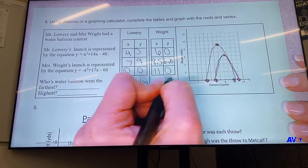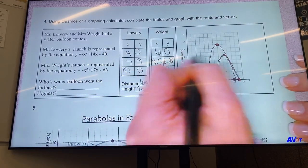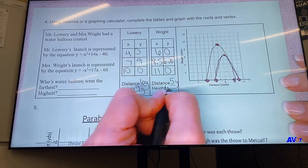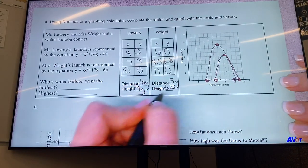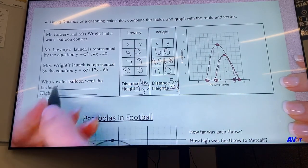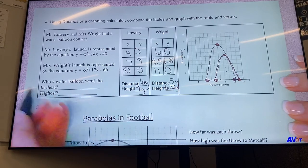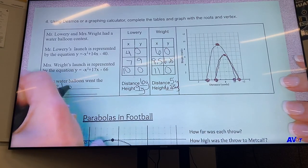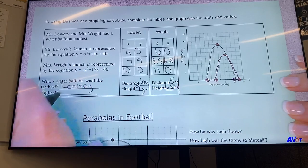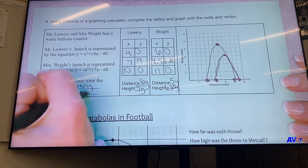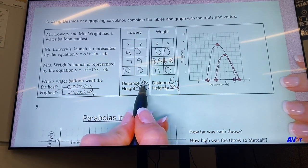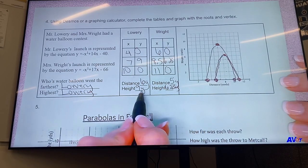So the distance was from 6 to 11, which is 1, 2, 3, 4, 5 yards, and then the height was just up to 6.25. So whose water balloon went the farthest? Lowery's did, and the highest was also Lowery. So his distance was 6 versus 5, his height was 9 versus 6.25.